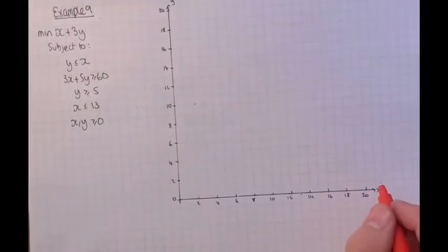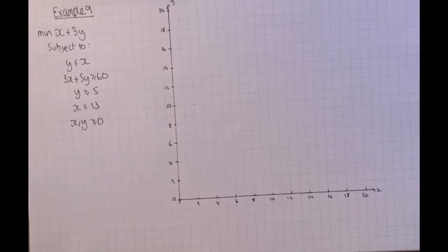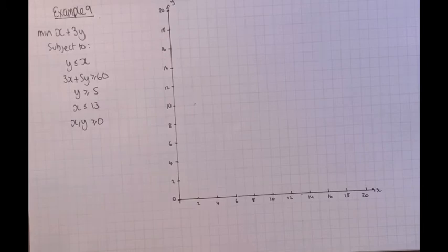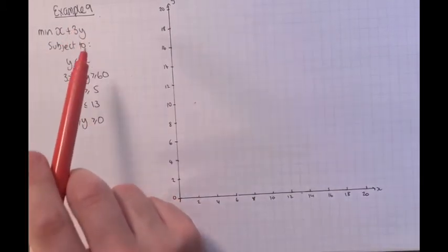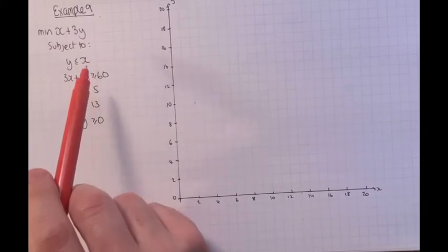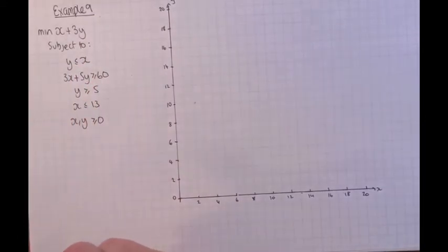Example 9 introduces point testing, also called vertex testing, to find the optimal points rather than using the ruler method. The goal is to minimise X plus 3Y subject to four constraints.